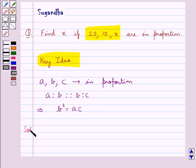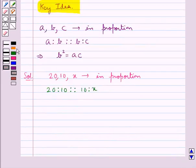Let's move on to the solution now. We are given that 20, 10 and X are in proportion, which means 20 is to 10 is proportional to 10 is to X. Or you can say 20 is to 10 is equal to 10 is to X.